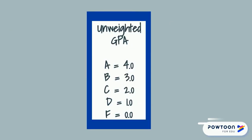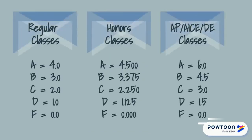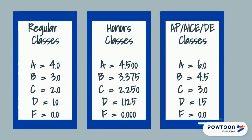For your unweighted GPA, all grades are awarded points based on the four-point grade scale, where an A is given four points, a B three, and so on. When calculating your weighted honors point average, or HPA, regular level classes continue to award points on the four-point scale; however, honors level courses are awarded points on a 4.5 scale, where an A is given 4.5 points, a B 3.375, and so on.